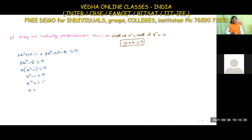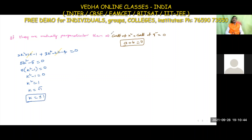Taking the square root, k = ±1. So the value of k is plus or minus 1. This is the required solution.